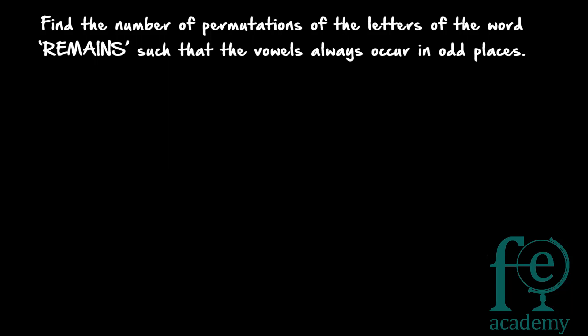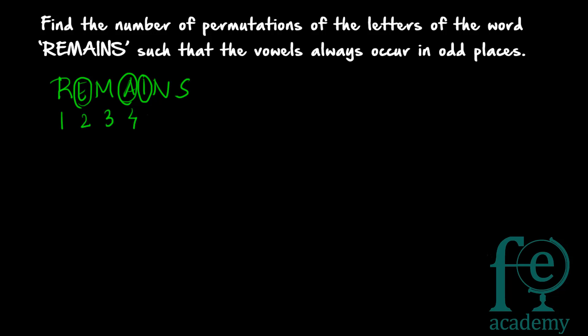Question number two: find the number of permutations of the letters of the word REMAINS such that the vowels always occur in odd places. You have to arrange the letters of REMAINS such that the vowels always occur in odd places. The vowels are E, A, and I — so these three vowels should always occur in odd places.